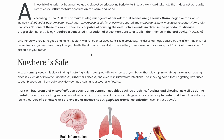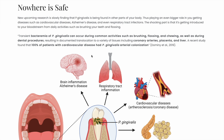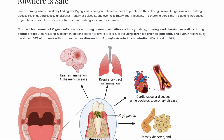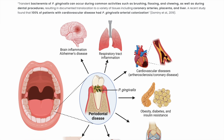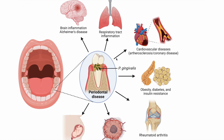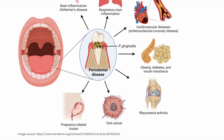What's worse is the damage doesn't end in your mouth. P. gingivalis can make its way to your bloodstream through brushing, flossing, and other dental procedures. Once there, it can go everywhere in your body. Research has found it in coronary arteries, placentas, and livers. We are seeing it play an even bigger role in diseases such as cardiovascular disease, Alzheimer's, and even respiratory tract infections.